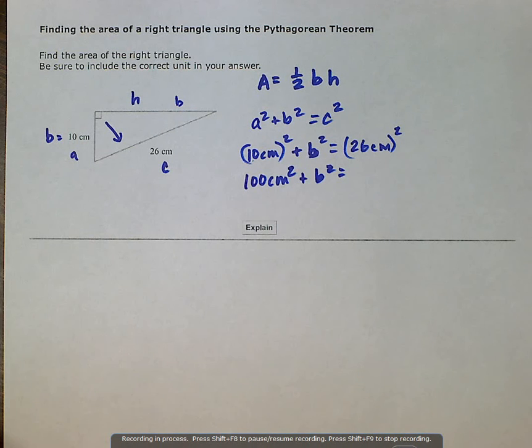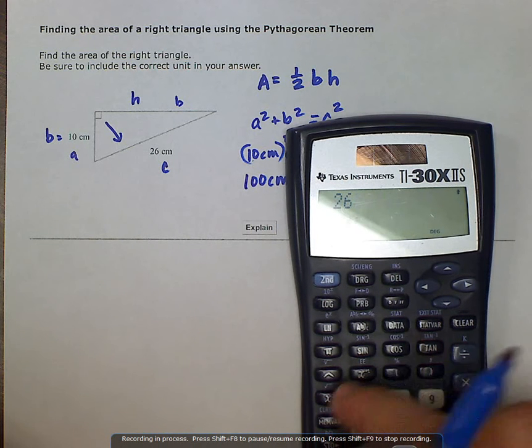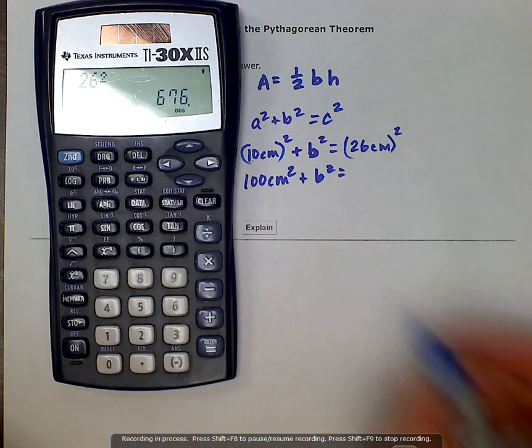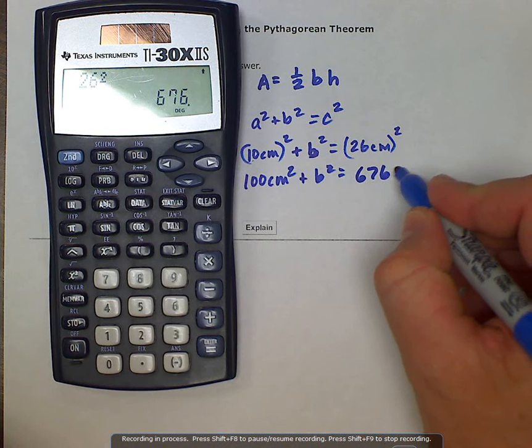26 squared is equal to 676. So this is 676, but also our units also gets squared here.